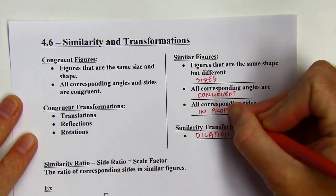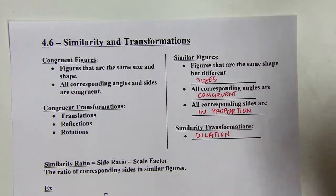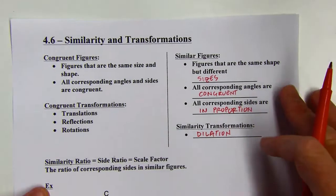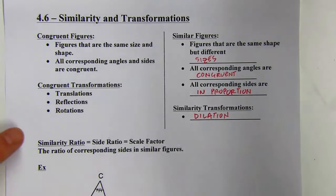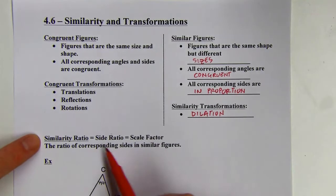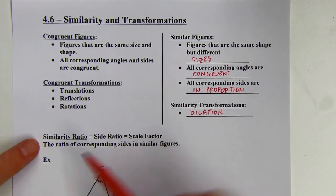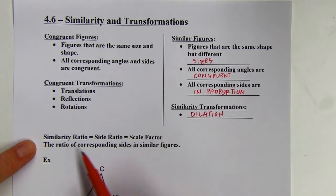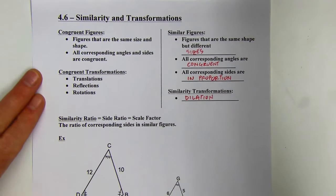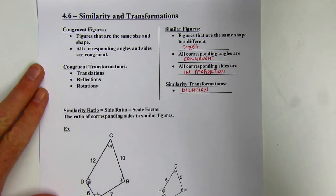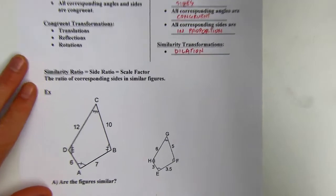The sides are going to be in proportion. For example, if you're tripling the size of a triangle, all of the side lengths are going to be tripled, so the sides are in proportion. The similarity ratio is the same as the side ratio or the scale factor. A ratio is a comparison of two numbers, so all you have to do to find a similarity ratio is find two matching sides.